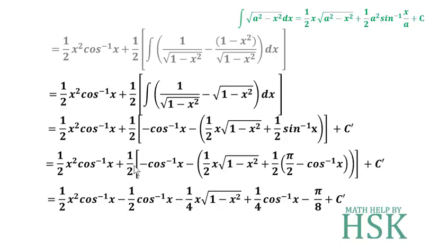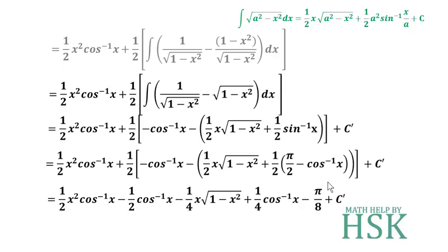Continuing to multiply (1/2) with the remaining terms: (1/2)·(−1/2)·x·√(1 − x²) = −(1/4)x·√(1 − x²). Then (−1/2)·(π/2) = −π/8, and (−1/2)·(−cos⁻¹(x)) = (1/4)cos⁻¹(x).